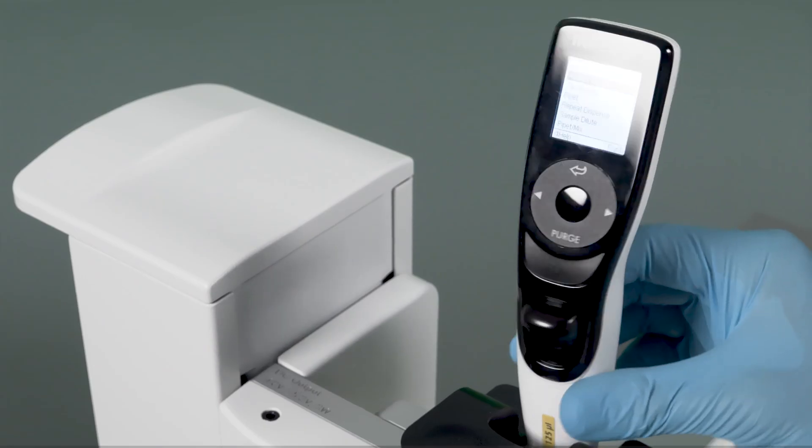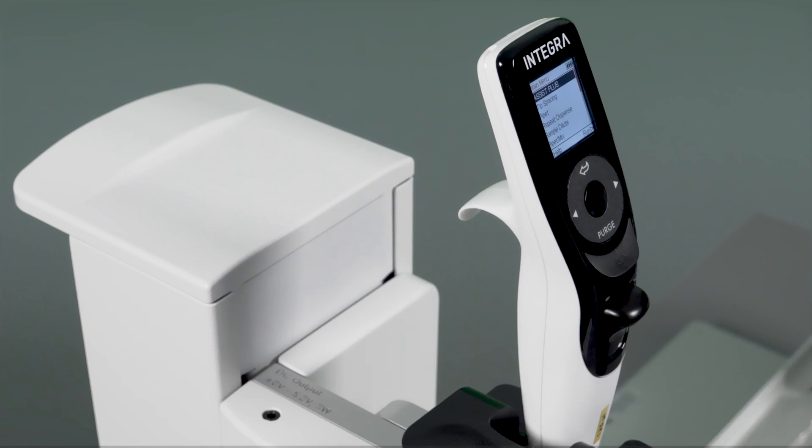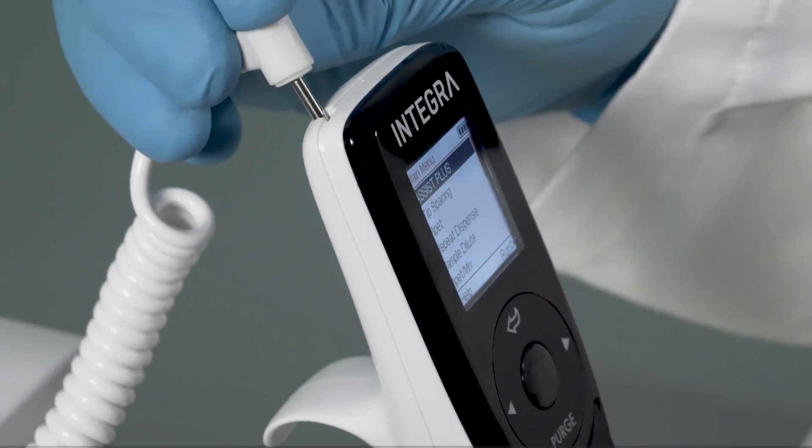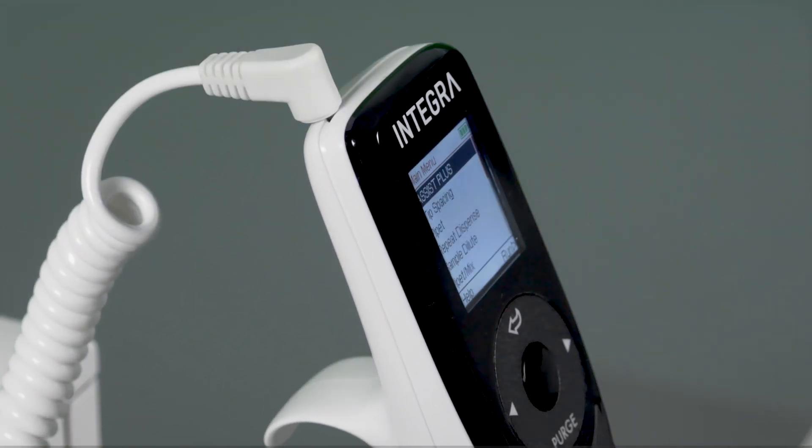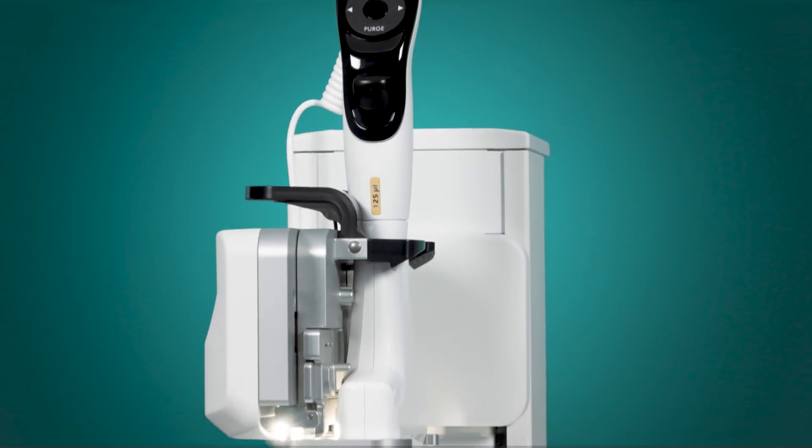Twist the pipette so that the display faces the front. Finally, connect the pipette charging cable to keep the pipette charged while it is installed in the instrument.